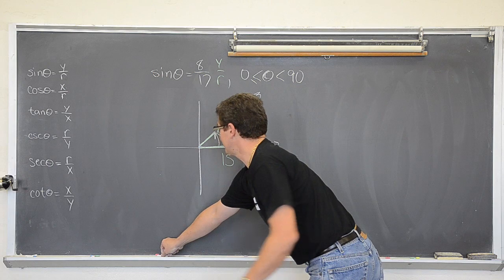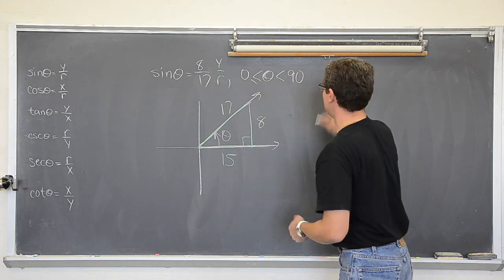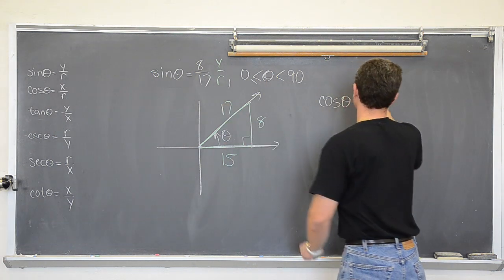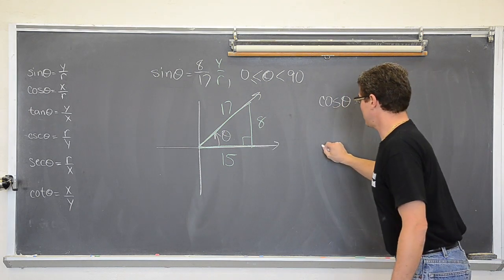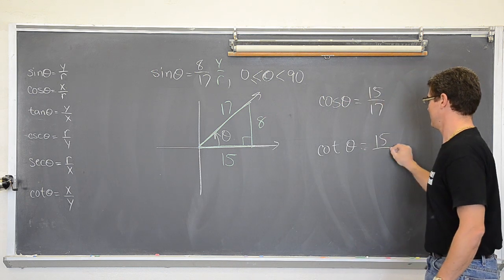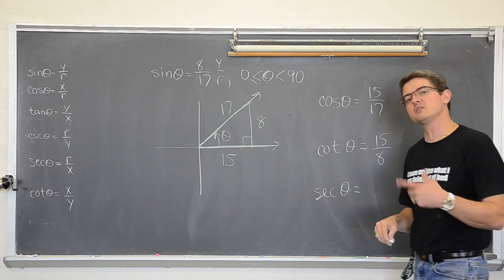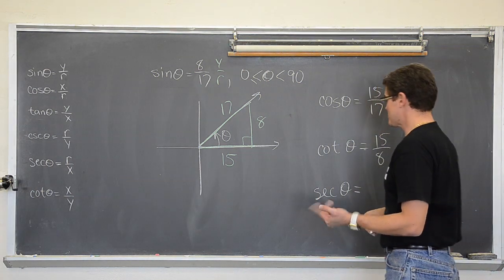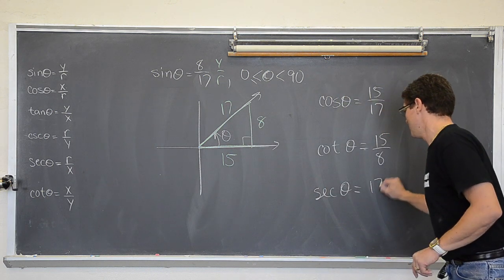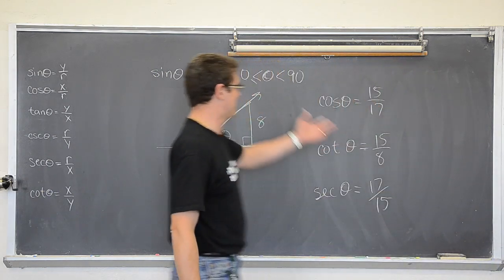So if you want the cosine of theta, it's just x over r — which is 15 over 17. If you'd like the cosecant of theta, that's r over x — or 17 over 15. I can set up all the other trig functions, but I hope you get the idea. Let's do one more.